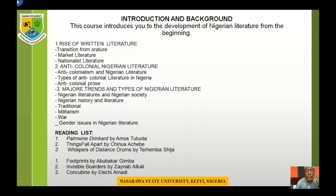This course introduces you to the development of Nigerian literature from the beginning. What we are going to look at in this course includes, one, the rise of written literature. Under it, we have transition from oral literature, market literature, and nationalist literature.